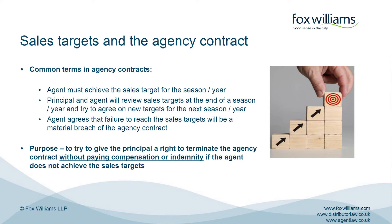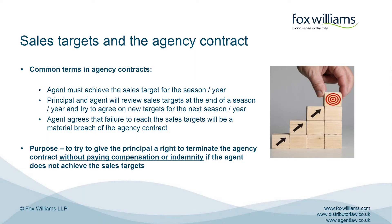If you have a written agency contract, it's likely to say something about sales targets. Common terms include: a duty on the agent to achieve the sales targets for a particular season or year; a provision that the principal and agent will meet at the end of that period to discuss and agree targets for the next season or year; a schedule setting out the sales targets for the first few seasons at the outset of the relationship; and there might be a provision saying that any failure by the agent to achieve sales targets is automatically a material breach of the agency contract.